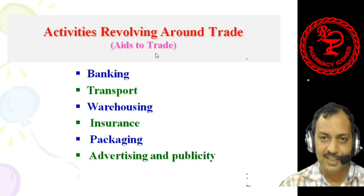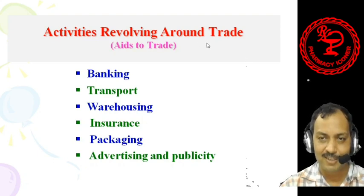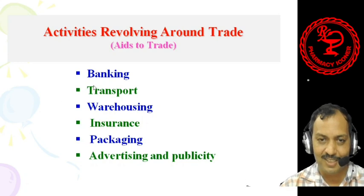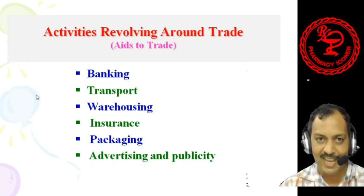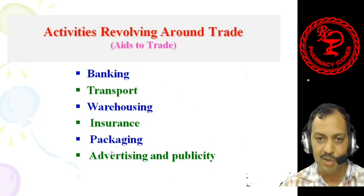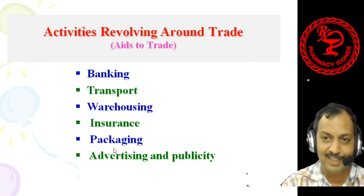Aids to Trade is also called activities revolving around trade. These are associated with trading but are not actually trading activities themselves. These activities include banking, transport, warehousing, insurance, packaging, advertising, and publicity. All these activities revolving around trade are responsible for reducing various types of hindrances associated with trading.